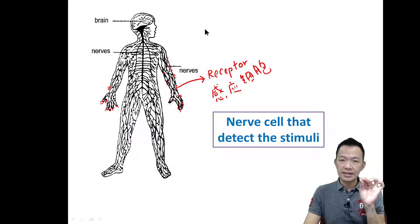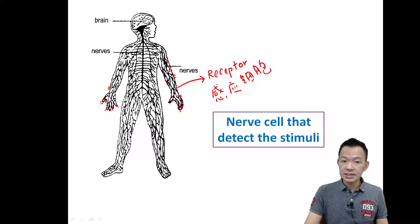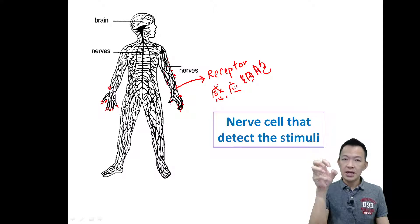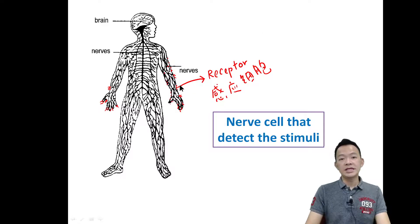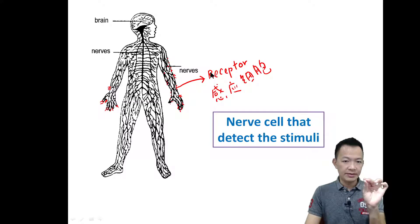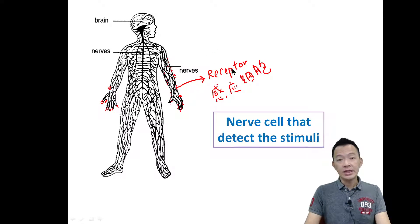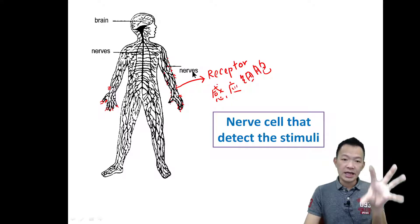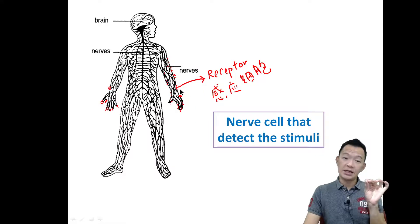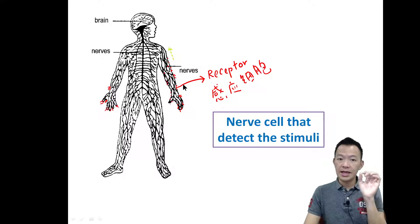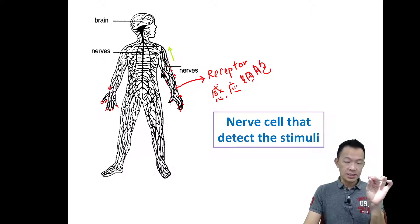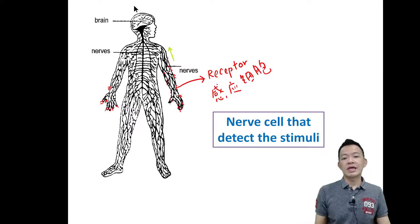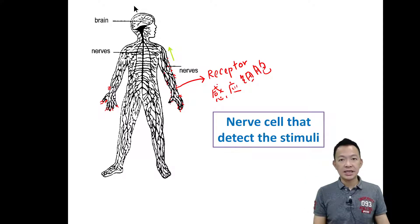Here's an example. Imagine a mosquito stings your skin — a mosquito bite. Under our skin, we have a lot of receptors. They contain a lot of nerve endings. The nerve cells detect the stimuli. So when the mosquito stings you, it will be detected by the receptor. The receptor detects the stimuli, produces impulses, and those impulses are sent to your brain for interpretation.